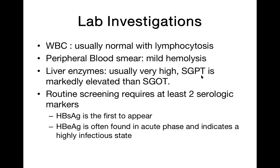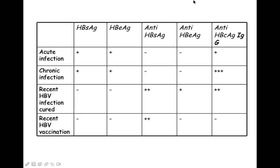Now regarding the serological marker table for hepatitis B: this is important for exam questions. For acute infection, HBsAg must be present — without HBsAg, acute infection cannot be diagnosed. HBeAg shows infectiousness of the patient. Anti-HBs is a protective antibody — if someone has been cured from hepatitis B or has received the hepatitis B vaccine, anti-HBs is positive.